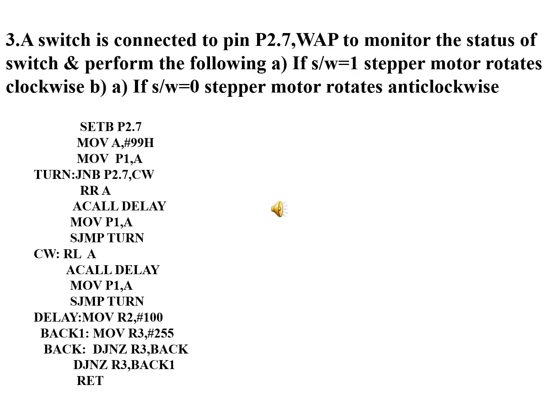The third program: a switch is connected to pin P2.7. Write an assembly language program to monitor the status of the switch — if the switch equals one, the stepper motor rotates in the clockwise direction; if the switch equals zero, the stepper motor rotates in the anticlockwise direction. Initially, you set bit P2.7 using a SETB instruction, and based on this bit you decide the rotation direction.